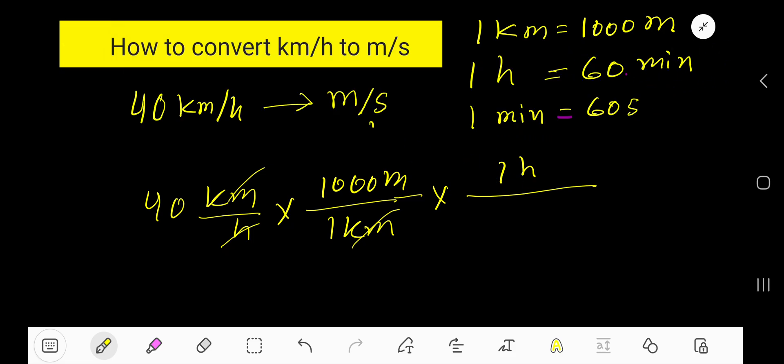Here, minute, 60 minute. Cancel this hour with this hour. Now, convert this minute to second using this equation. One minute, come to the top, and then 60 second.